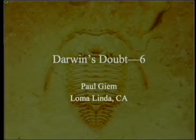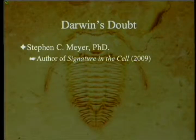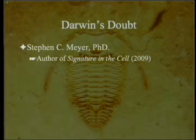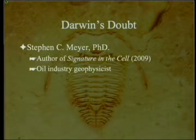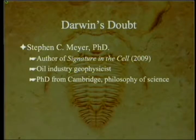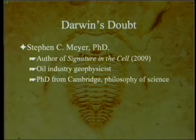Darwin's Doubt, presentation number six. The book Darwin's Doubt was written by Steve Meyer, who is also author of Signature in the Cell, a very good book in its own right. He was originally an oil industry geophysicist with a master's in geology, who became interested in the origin of life and then the information question, and got his PhD from Cambridge University in the philosophy of science.